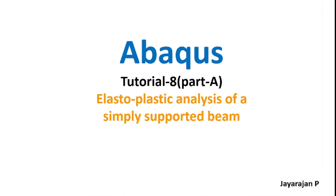Hello, and a great welcome to the series on Abaqus. My name is Jaraj. This is tutorial number 8. It explains the elasto-plastic analysis of a simply supported steel beam using Abaqus. This tutorial will be split into two parts, part A and B. Part A covers modules such as parts, property, assembly, loads and meshing, while part B explains the results.